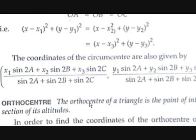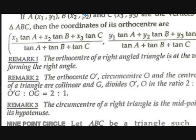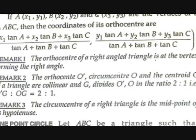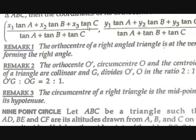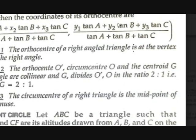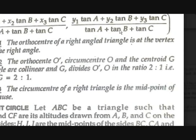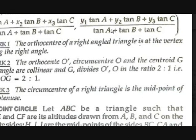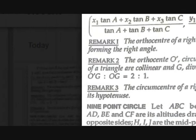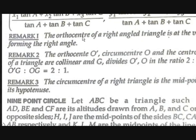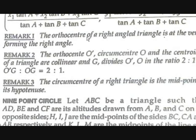The orthocenter is nothing but the point of intersection of all the altitudes. If A(X1, Y1), B(X2, Y2), and C(X3, Y3) are the vertices of triangle ABC, then the coordinates of the orthocenter are ((X1·tanA + X2·tanB + X3·tanC) / (tanA + tanB + tanC), (Y1·tanA + Y2·tanB + Y3·tanC) / (tanA + tanB + tanC)). An important note: the orthocenter of a right angle triangle is at the vertex forming the right angle. So if triangle ABC has a right angle at B, then the orthocenter is point B.